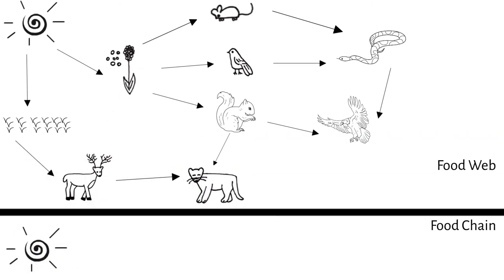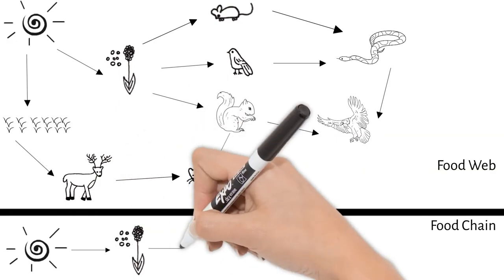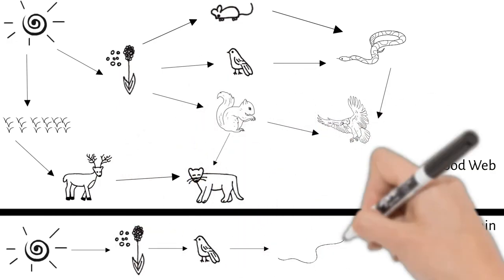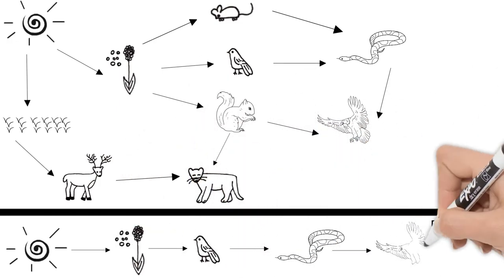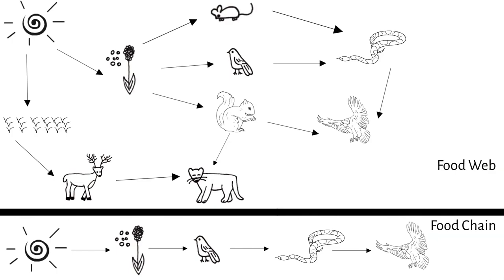I can go from the sun to seeds to bird to snake and then to an eagle. There are several different food chains you can create from this one food web.